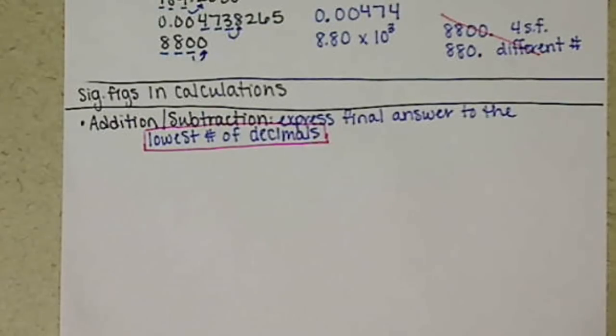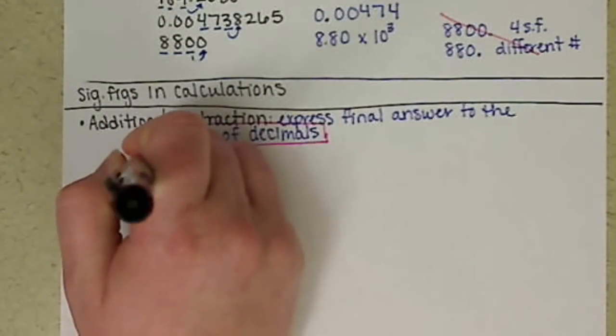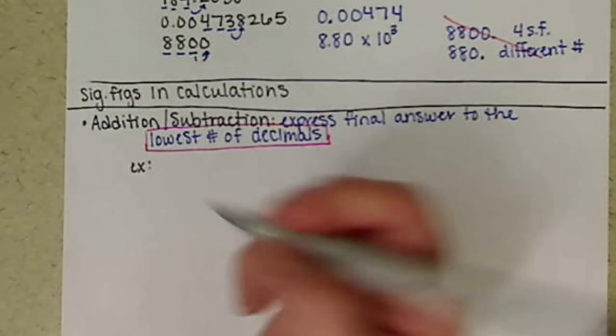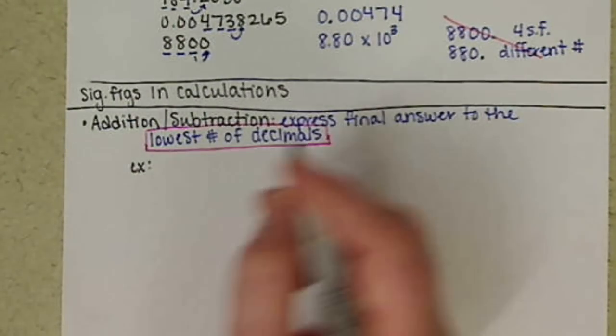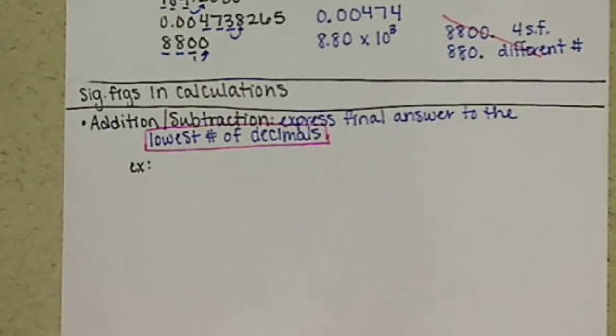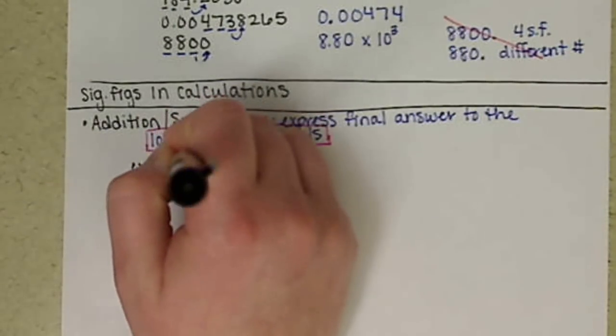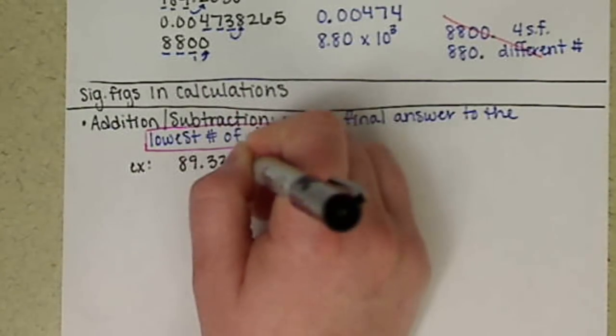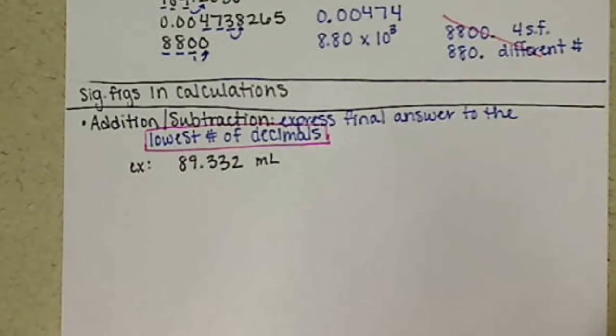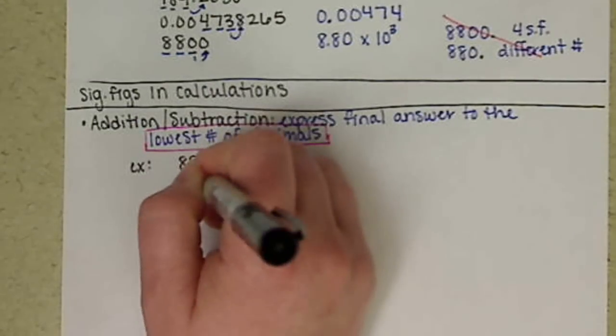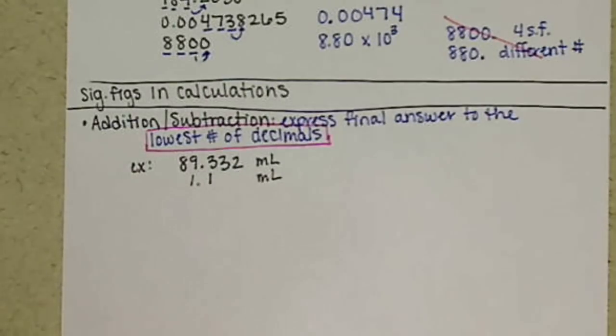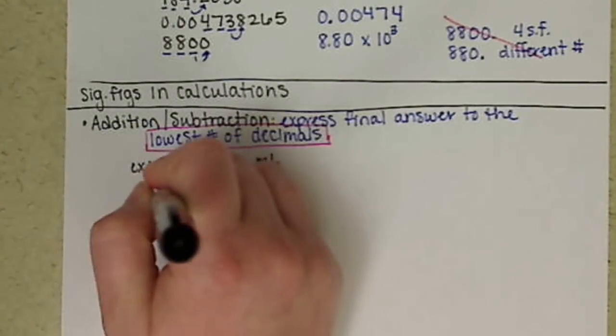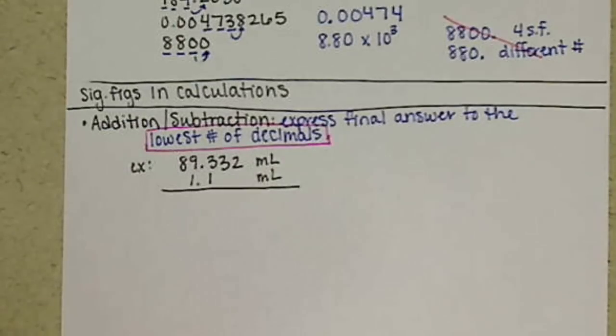I'm going to box that in my obnoxious hot pink color. If we look at an example of this for where this comes into play, if we want to say we're taking two measurements of a volume and the first measurement we have 89.332, we'll say it's in milliliters. And our second one is 1.1 milliliters, coming from two different measuring devices, so we have two different degrees of accuracy.